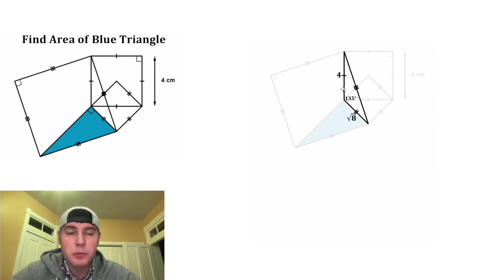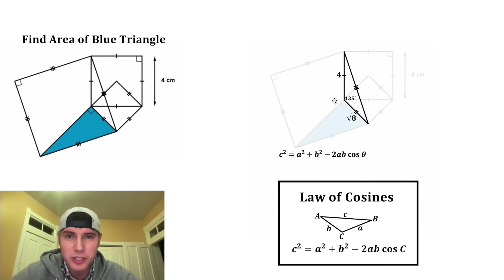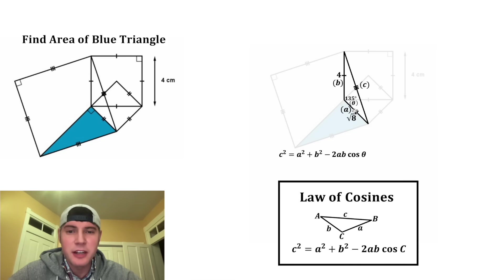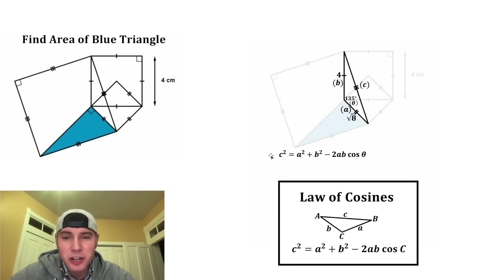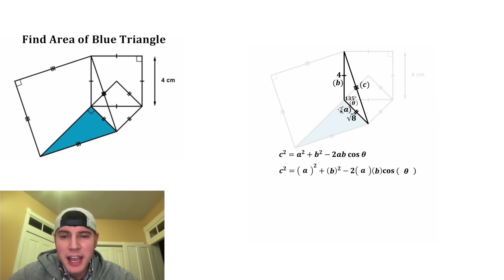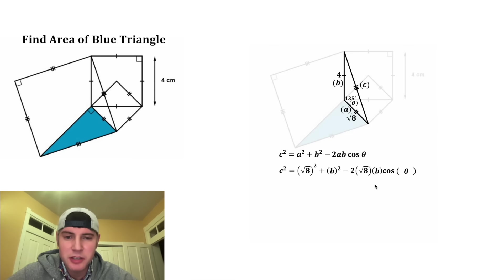And now since this is an obtuse triangle, we have to use the law of cosines. So if we call the sides a, b, and c, and this angle theta, the law of cosines tells us c squared equals a squared plus b squared minus two times a times b cosine of theta. We're gonna use this to solve for side c. So a is equal to the square root of eight, b is equal to four, and theta is equal to 135 degrees.